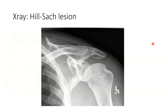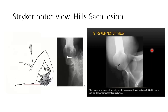The Hill-Sachs lesion is on the humeral head at the posterior lateral aspect, best viewed with the Stryker notch view. The patient is supine with the cassette at the back of the shoulder, hand placed on the head, and the X-ray beam directed 10 degrees cranially. You can see the Hill-Sachs lesion in this view.